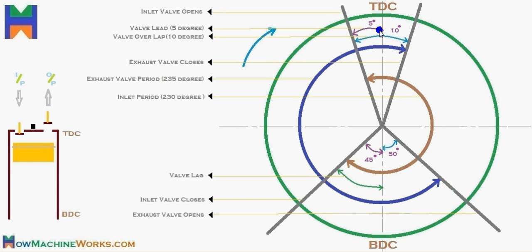The inlet valve opens before TDC by 5 degrees, and this advance opening is called the valve lead. So the inlet valve lead is 5 degrees. The inlet valve closes 45 degrees after BDC, and this delayed closing is known as the valve lag — 45 degrees of valve lag. That covers the inlet period.